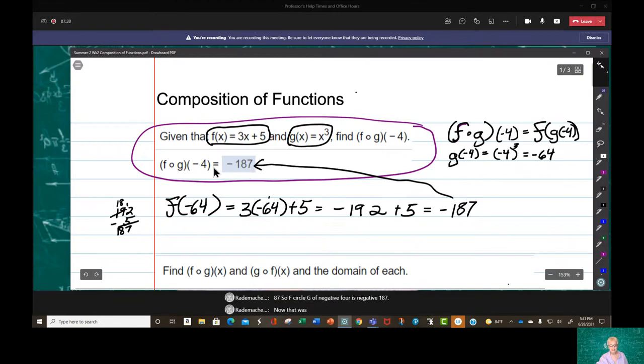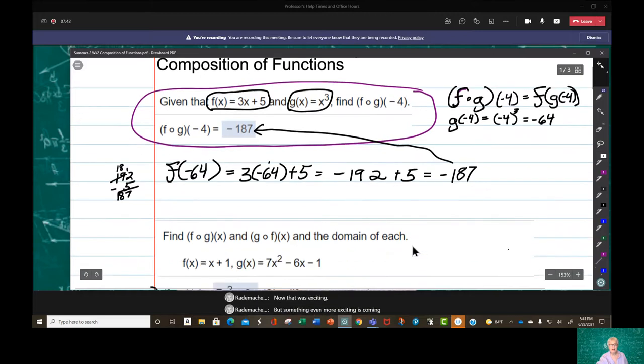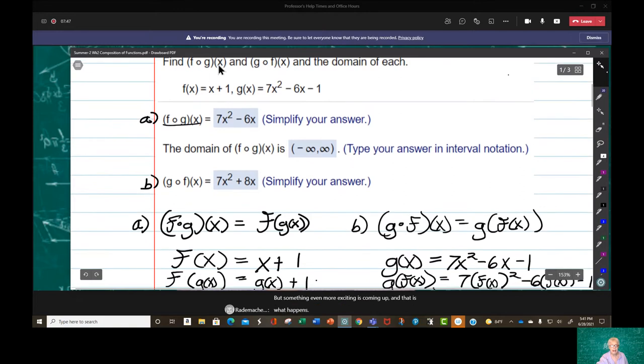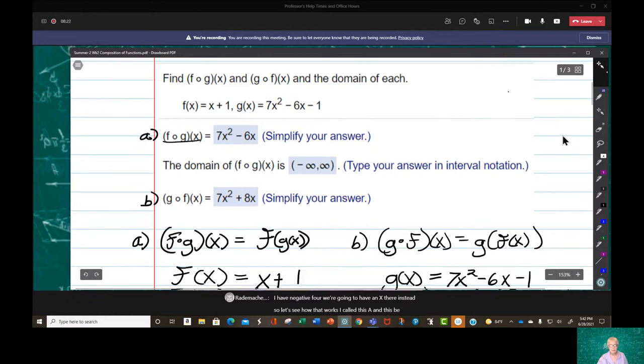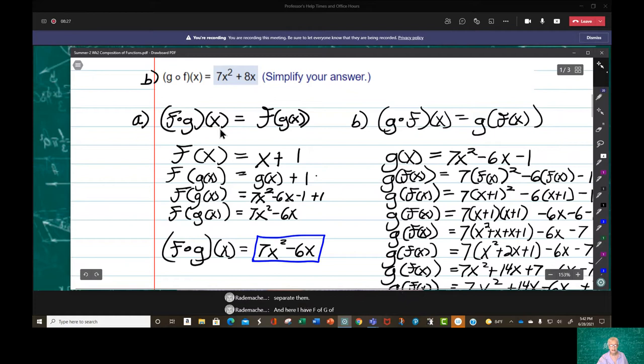Now that was exciting. But something even more exciting is coming up, and that is what happens when we leave an x in there and we take away a number. That is, we don't even use a number. That makes life more interesting. Instead of f of g of negative 4, we're going to find f of g of x. And instead of finding g of f of negative 4, we're going to have an x there instead. So let's see how that works. I call this a and this b just to separate them. And here I have f of g of x, and here I have f circle g of x and g circle f of x. But of course, what this is, is just f with a g of x where the x should be.